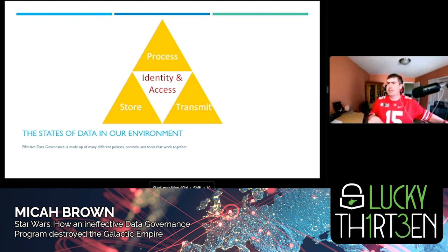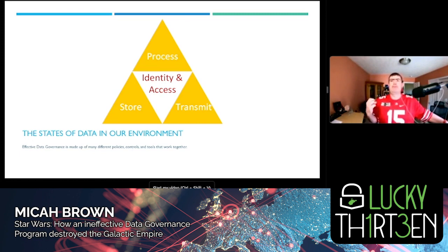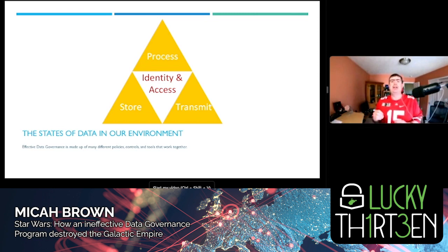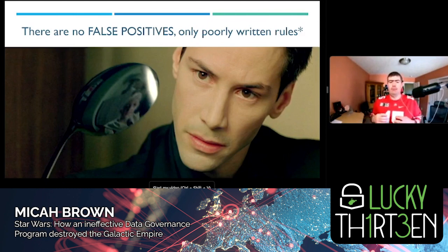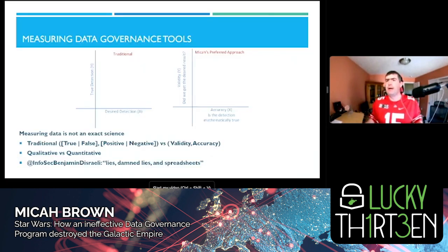When talking about data governance, the three triforces — like in Zelda — are creating policies on how data is stored, processed, and transmitted. But there's a fourth hidden triforce: identity and access management. It is a pillar within data governance because our tools make the fundamental assumption that any action seen being taken by a specific user or entity is actually that user or entity. We also need to remember: there are no false positives, there are only poorly written rules — very true in DLP, as I'll show in a moment.